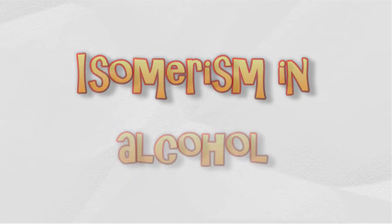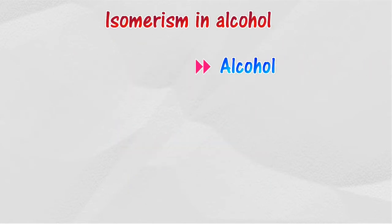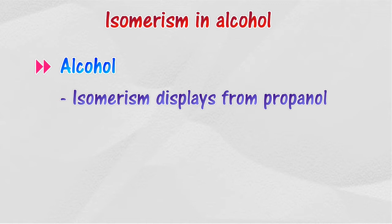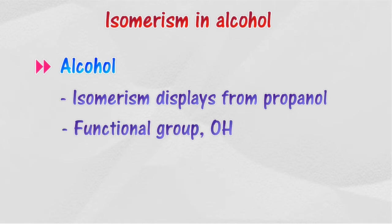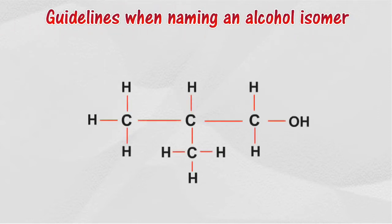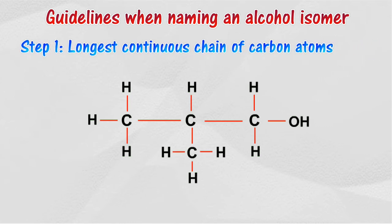Isomerism in alcohol: alcohol displays isomerism beginning from propanol. The first and second alcohol members do not display isomerism. The position of the functional group — the OH group — needs to be mentioned in the nomenclature of alcohol. The steps are the same as those used for naming the isomers of alkenes, with one additional step.